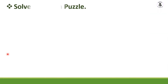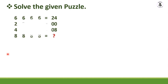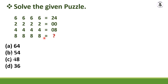Next, solve the given puzzle: 6, 6, 6, 6 equals 24; second row: 2, 2, 2, 2 equals 0; 4, 4, 4, 4 equals 8; and you should find the result for 8, 8, 8, 8. Options: Option A: 64, Option B: 54, Option C: 48, Option D: 36. I will give 10 seconds to solve the problem.